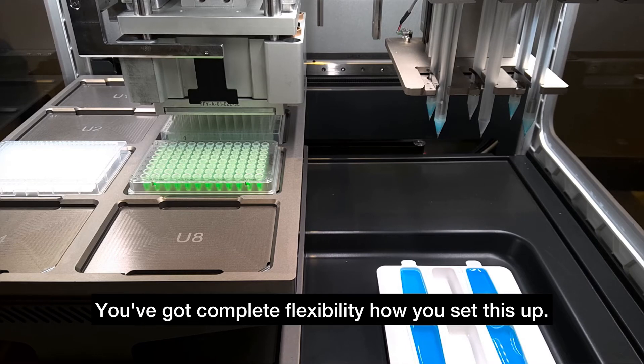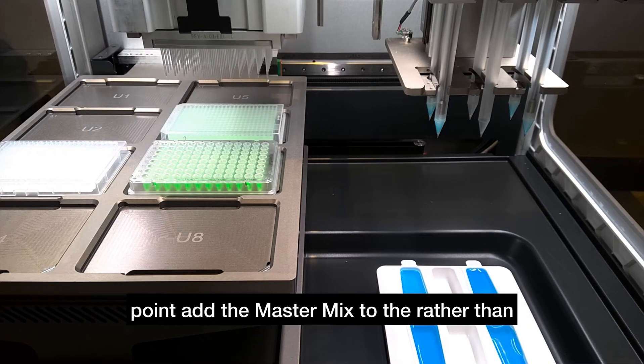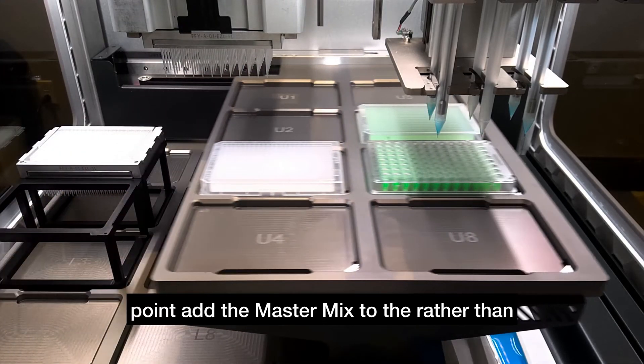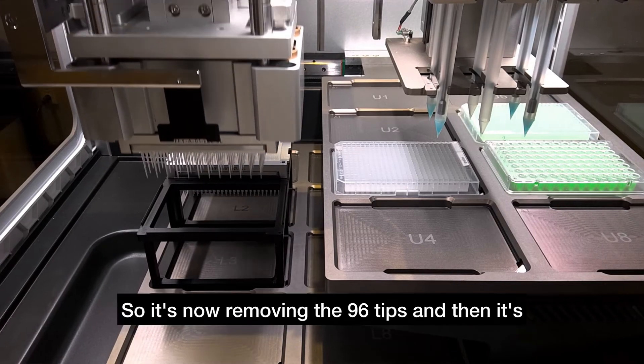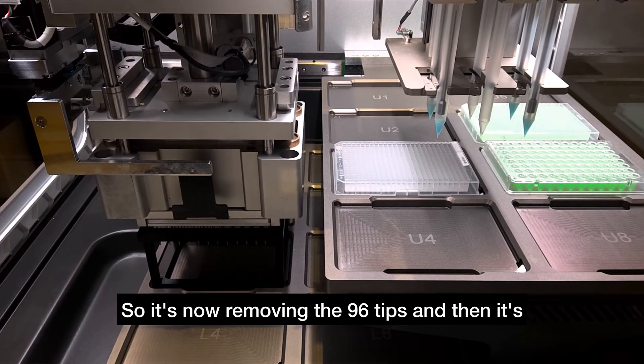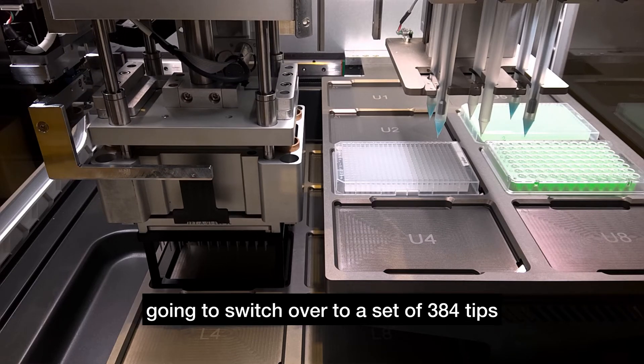You've got complete flexibility how you set this up. As I mentioned, you could add the master mix to the 384 well plate rather than to the source 96 as we did. It's now removing the 96 tips and then it's going to switch over to a set of 384 tips for the final step.